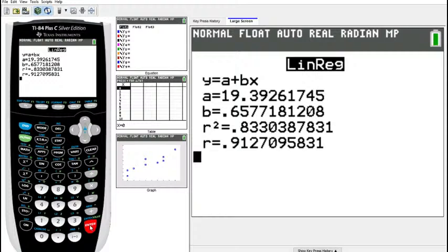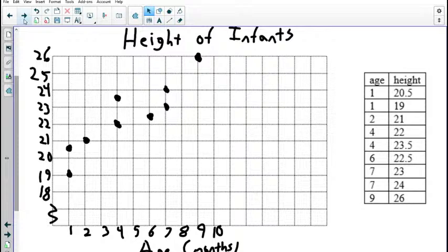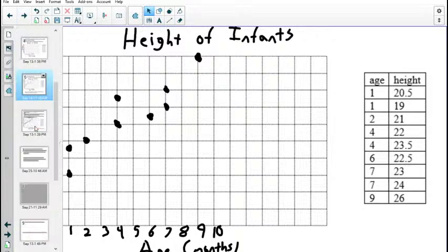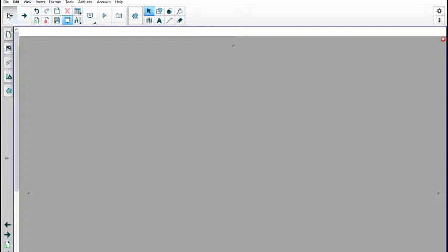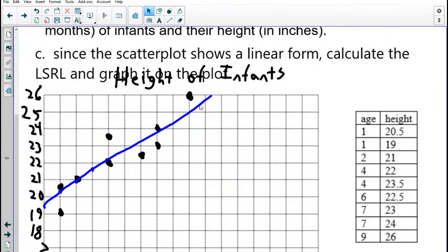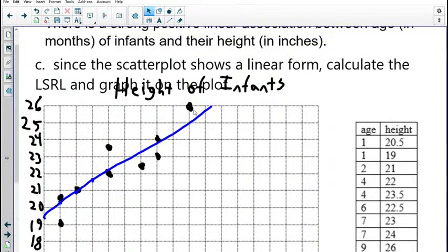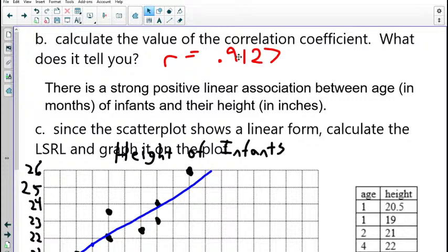And there it should give you a regression equation. So what is the correlation coefficient? Correlation coefficient, first off. It's R. Correlation coefficient is R. So R. So here's the line. R is 0.9127. And R being 0.9127 tells me that there is a strong positive, because R is positive, linear association between age of infants and their height.